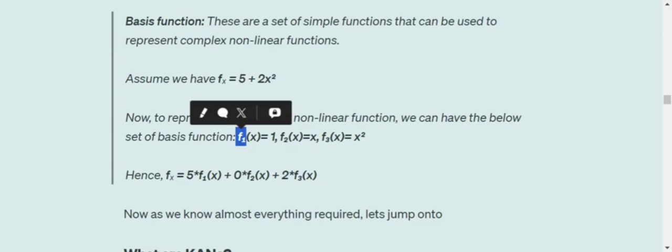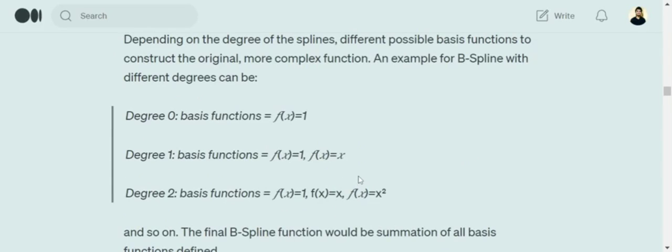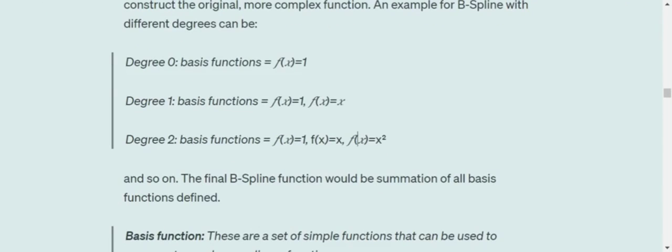5 into f of 1, as the value of f of 1 equals to 1, it is a constant. 0 into f of 2, as f of 2 equals to x, and 2 into f of 3 x square. So the final equation we get is 5 into 1 plus 0 into x plus 2 into x square. Eventually, the final equation. So basically, a B-spline function would consist of basis functions with particular degree and less than that degree. So if the degree of a B-spline function is 2, it would include basis functions of degree 2, degree 1 and degree 0.